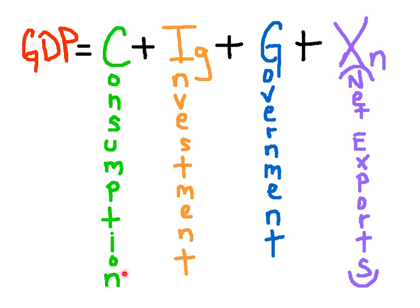Consumption consists of all household spending — that's spending on all goods and services, durable goods and non-durable goods. The service sector makes up the largest component of consumption.